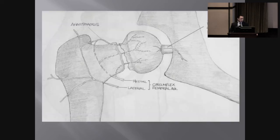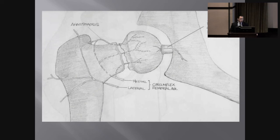Blood supply becomes a significant factor in this fracture. The main artery contributing blood supply to the femoral head is the medial circumflex artery. Because of its proximity around the neck, where the common fractures occur, it is at risk to be injured. Unfortunately, you can't always repair or recover that vascular supply.